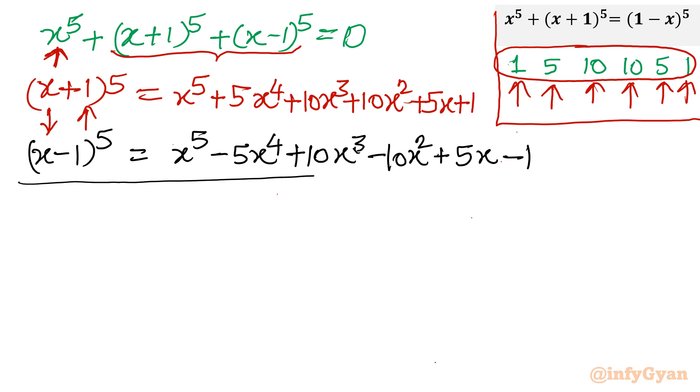Simply add. So once I will add, I will write x plus 1 whole power 5 plus x minus 1 whole power 5. Now you can see this term will be over, this term will be over, and last term will be over. What is left? x power 5 plus x power 5, so 2x power 5. 10x cube plus 10x cube, 20x cube. 5x plus 5x, 10x.